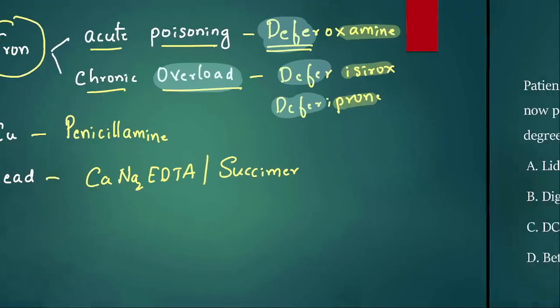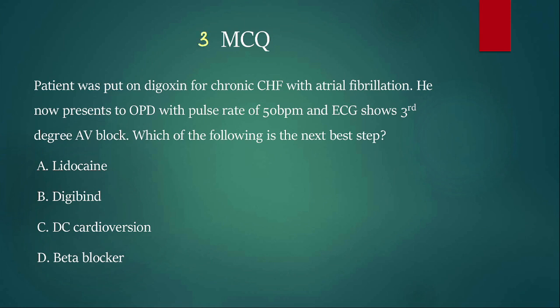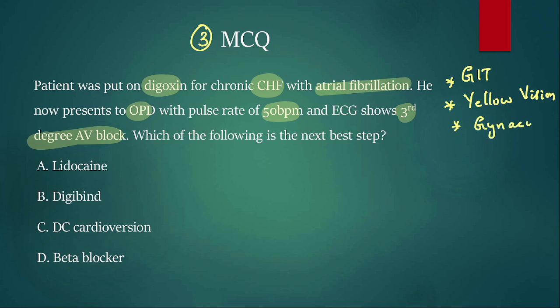Coming to the third MCQ: patient was put on digoxin for chronic CHF with atrial fibrillation. He now presents to the OPD with pulse rate of 50 and he shows third-degree AV block. Which of the following is the best step? Remember, when we give digoxin - digoxin causes common side effect GI upset, that is nausea, vomiting, diarrhea. Sometimes it can cause yellow vision, that is very rare, and also it can cause gynecomastia. But when the digoxin levels are high, it's a narrow therapeutic index drug, it can lead to arrhythmias.